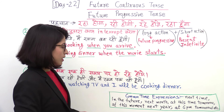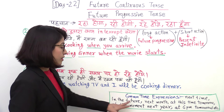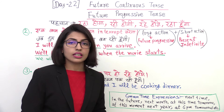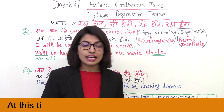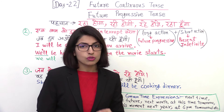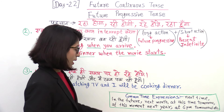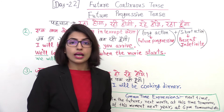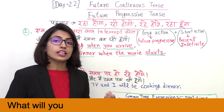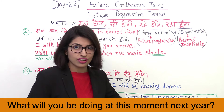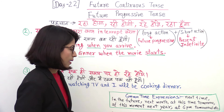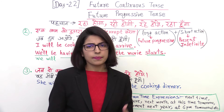The most common time expressions used in this tense are: next week, in the future, next month, at this time tomorrow. For example: What will you be doing at this time tomorrow? I can say: At this time tomorrow, I will be running a marathon. Or: I will be working. Or: At this time tomorrow, I will be studying. You can also use: at this moment next year. If someone asks what you will be doing next year, you can ask in English: What will you be doing at this moment next year? You can also give specific times like 'at 6 pm tomorrow'. The list is not limited — practice as much as possible and you will understand better.